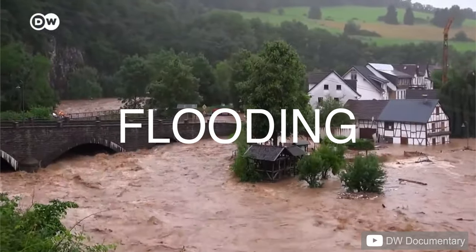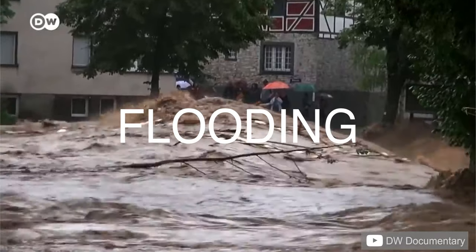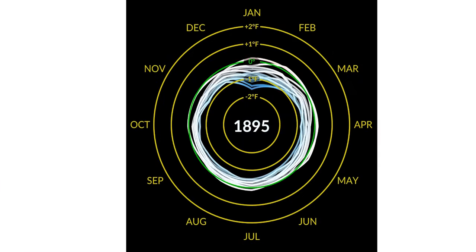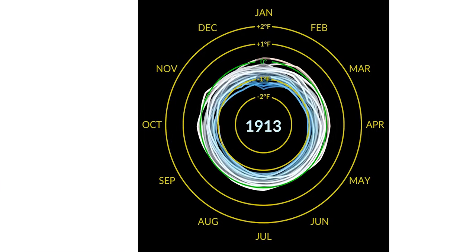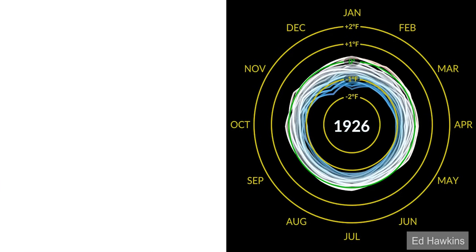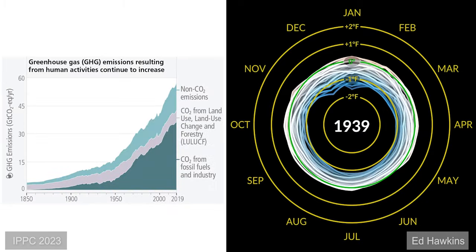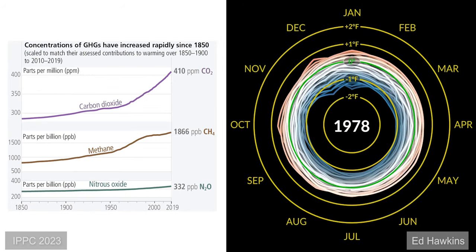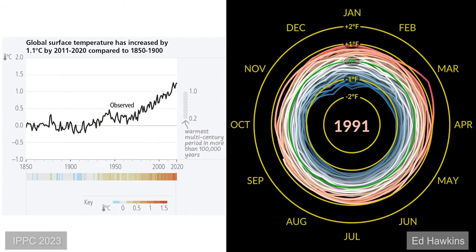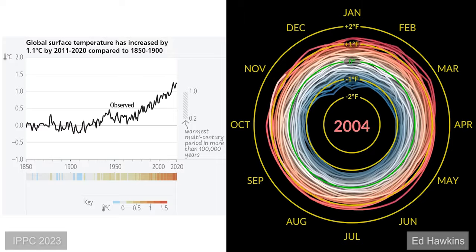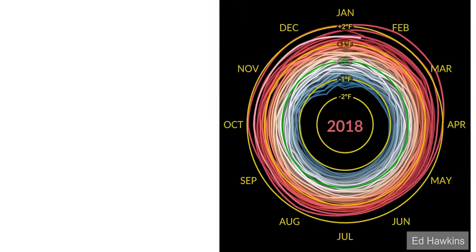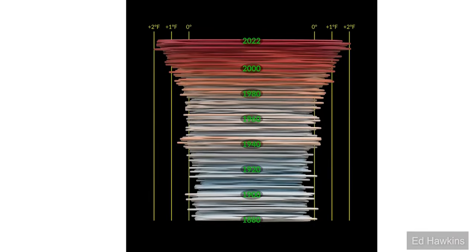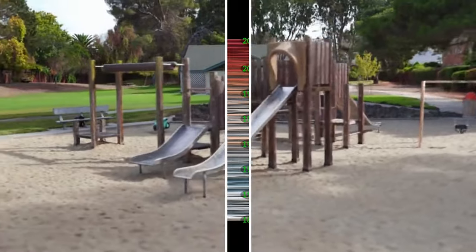Extreme weather events have become more frequent and intense due to the increase in greenhouse gases from human activities. However, with scientific data, figures, and plots, it's hard to imagine the impact of climate change on individuals, as they may perceive the problem as one that affects only distant regions far in the future.